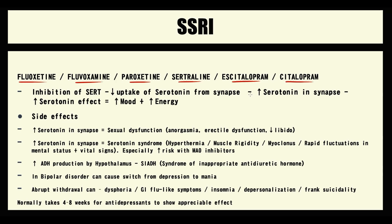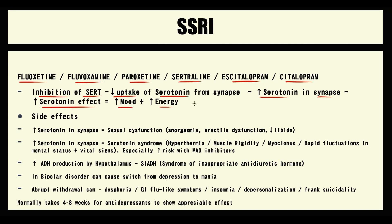To summarize: selective serotonin reuptake inhibitors inhibit the function of the SERT transporter. This causes decreasing reuptake of serotonin from the synapse, thereby the amount of serotonin molecules in the synapse increases. The higher the amount of serotonin molecules in the synapse, the higher the serotonin effect, and thereby the better the mood and the more energy increases.